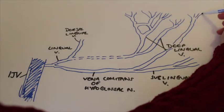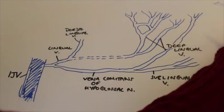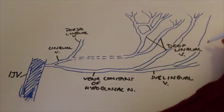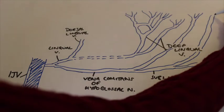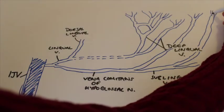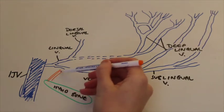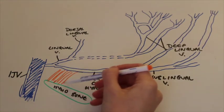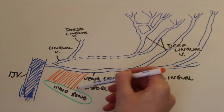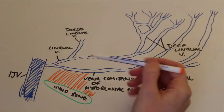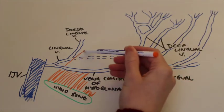It's formed by the union of the deep lingual vein with the sublingual vein. It then accompanies the hypoglossal nerve and drains it. It runs back between the myelohyoid and hyoglossus muscles with the hypoglossal nerve to reach its destination. It then either joins with the lingual vein to enter the internal jugular vein or it can just simply enter the internal jugular vein or it can join the facial vein to then drain into the internal jugular vein.